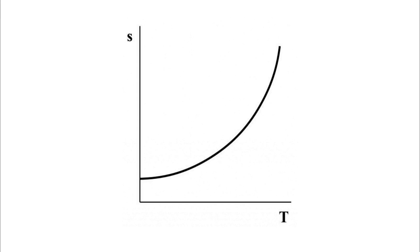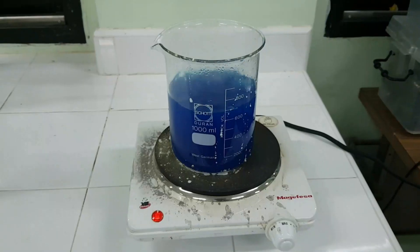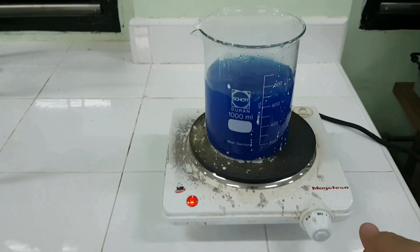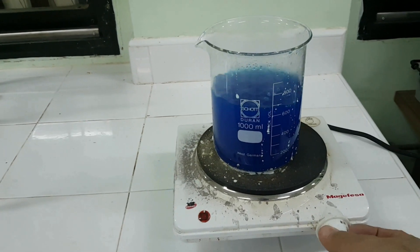The solubility curve of a substance is the graph that represents solubility versus temperature. Solubility is the concentration of a saturated solution. Most of these curves are upward, meaning that the higher the temperature, the greater the solubility. If a lot of solute is dissolved at high temperature and then cooled down, there will be an excess of solid that will precipitate as crystals.